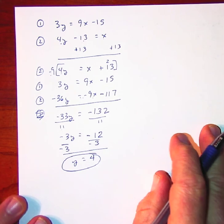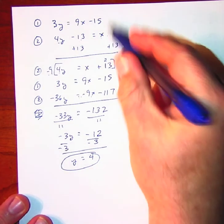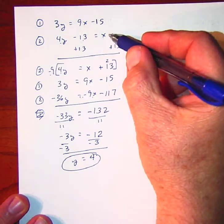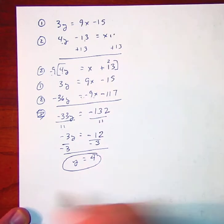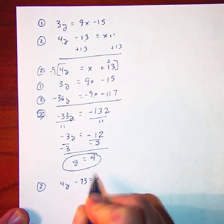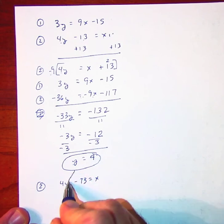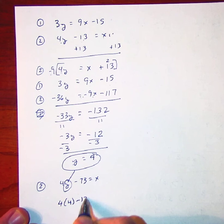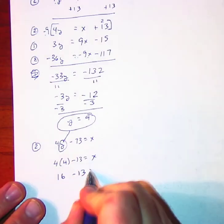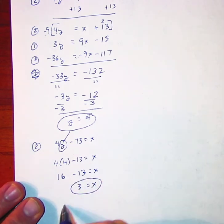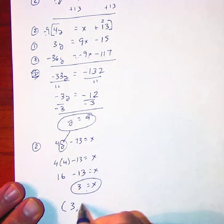That's quite a process, but it's a harder problem. Now we'll substitute y = 4 into one of the two equations — the second equation: 4y minus 13 is equal to x. So 4 times 4 minus 13 is equal to x, which is 16 minus 13, or 3 is equal to x. So the solution is x = 3, y = 4.